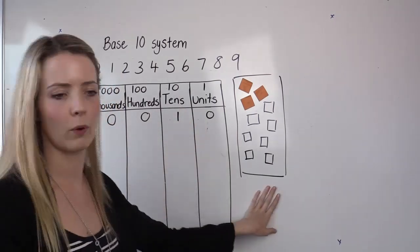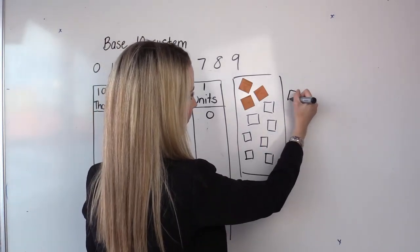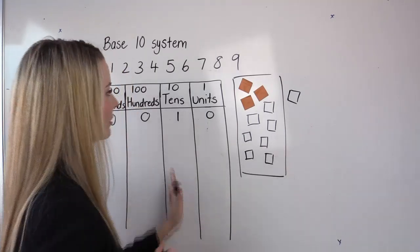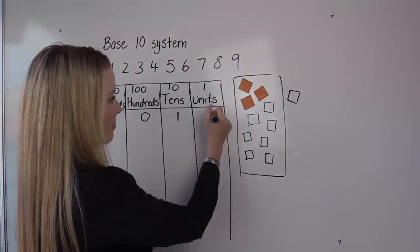Now if I add one more square here, I now have one lot of 10 and one spare. So that's one lot of 10 and one spare.